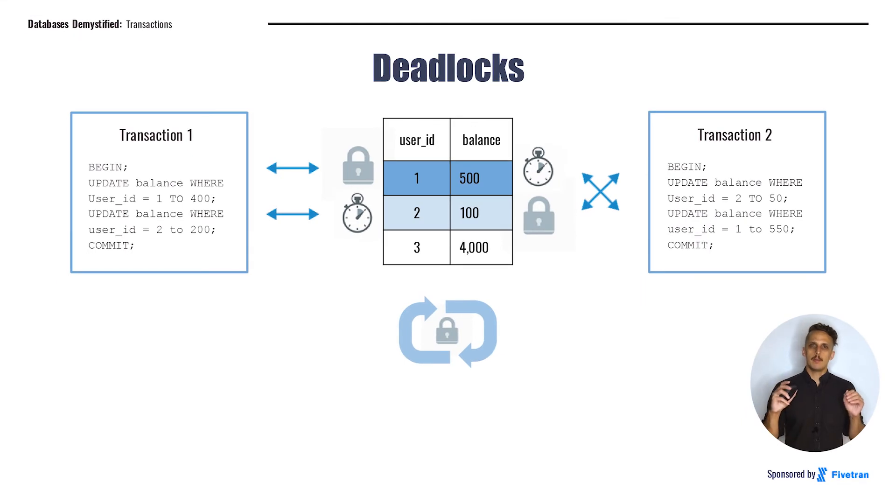One interesting and extremely painful problem related to locking is known as the deadlock. Deadlocks can happen when two transactions are trying to operate on the same data at the same time and both of them are waiting on each other. And then everything freezes because neither one can proceed until the other releases its lock. In the example that we've given here, transaction one is trying to move money from account one to account two. And transaction two is trying to move money from account two to account one.